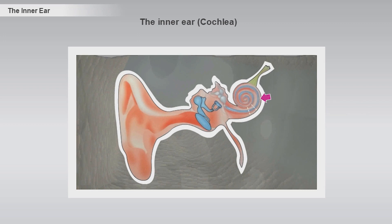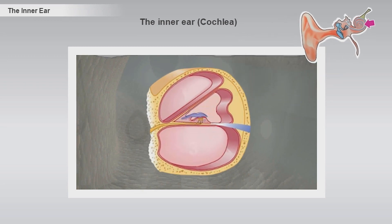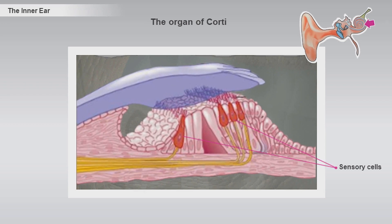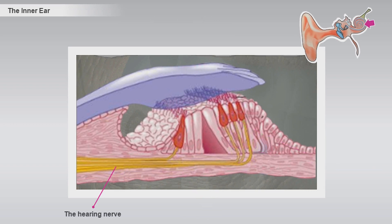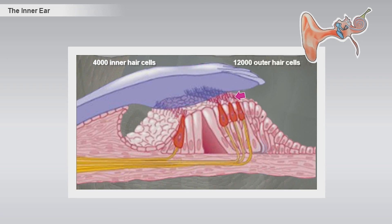The individual coils are divided into three fluid-filled canals that extend throughout the length of the cochlea. In the middle canal, we find the organ of Corti, which contains the sensory cells — the so-called hair cells — that connect to the nerve fibers. In the middle of the cochlea, all nerve fibers are gathered into one nerve, the hearing nerve. The sensory cells consist of one row of 4,000 inner hair cells and three rows with a total of 12,000 outer hair cells.